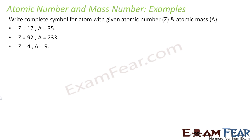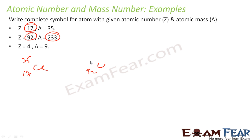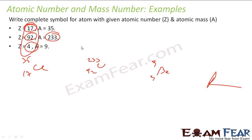Last example: define the complete symbol for atoms given their atomic number and mass. Atomic number 17 = Chlorine (Cl) with mass 35. Atomic number 92 = Uranium (U) with mass 233. Atomic number 4 = Beryllium (Be). This question tests whether you know which element corresponds to each atomic number.